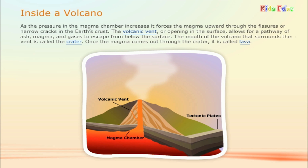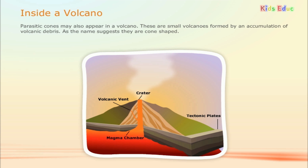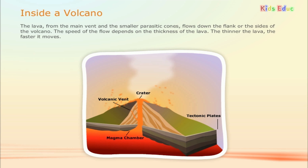The volcanic vent, or opening in the surface, allows for a pathway of ash, magma, and gases to escape from below the surface. The mouth of the volcano that surrounds the vent is called the crater. Once the magma comes out through the crater, it is called lava. Parasitic cones may also appear in a volcano — these are small, cone-shaped volcanoes formed by an accumulation of volcanic debris. The lava from the main vent and smaller parasitic cones flows down the flank or sides of the volcano. The speed of the flow depends on the thickness of the lava: the thinner the lava, the faster it moves.